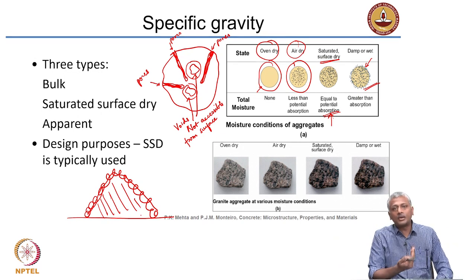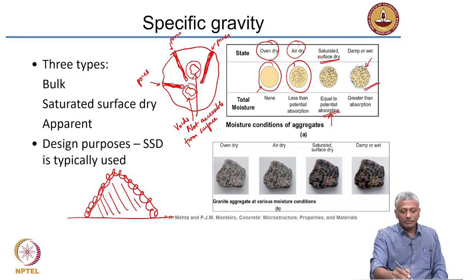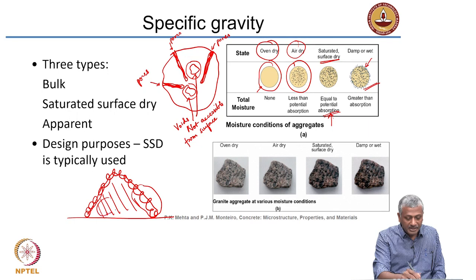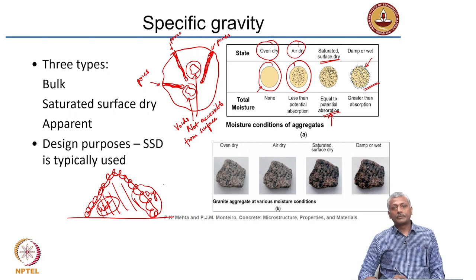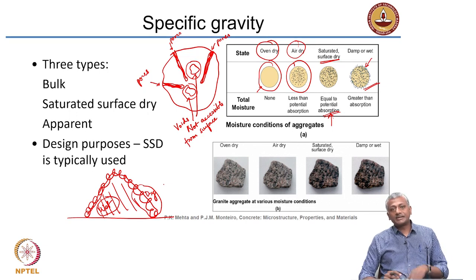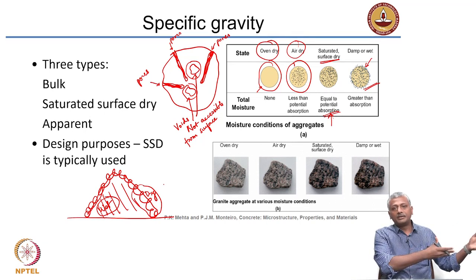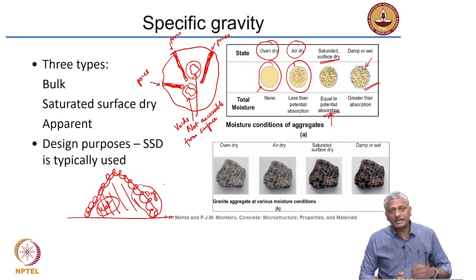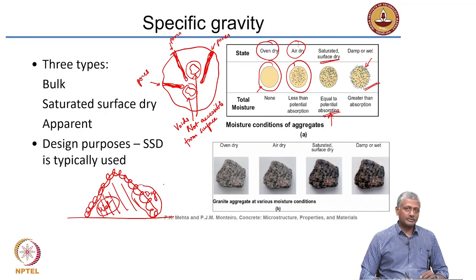When you are taking this aggregate and loading it into the concrete mixer, if you take from the surface you get all dry aggregate; if you take from the inside you get all wet aggregate. As a result, in the same concrete mix you are preparing in your plant, your aggregate moisture content may vary from batch to batch. Because of that, you will get inconsistent performance of your concrete. It is very important to control the aggregate moisture.